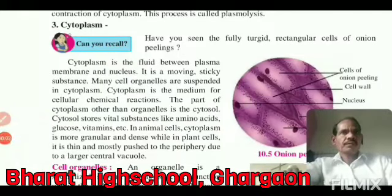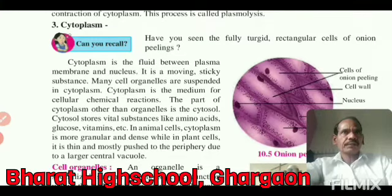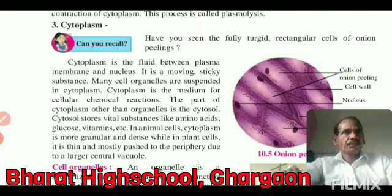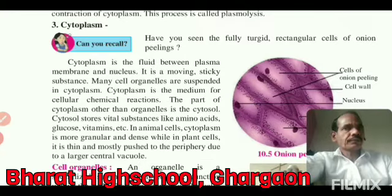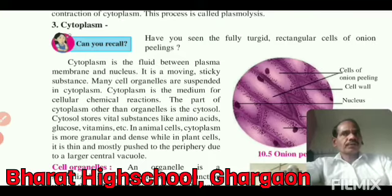In the last lecture we have seen the structure of the cell - plant cell and animal cell. We have seen components of a cell, including the cell wall, plasma membrane, also called the cell membrane. We have also seen endocytosis, diffusion, and osmosis.